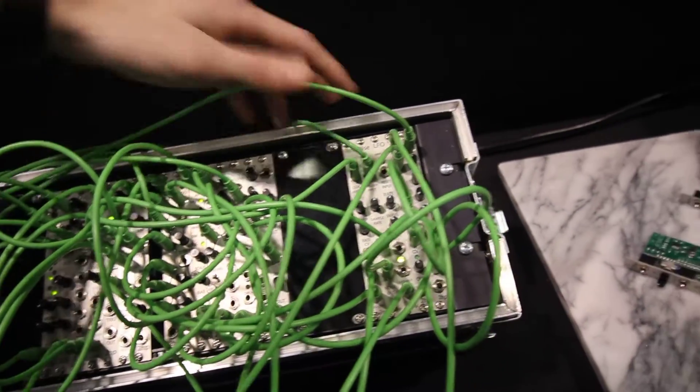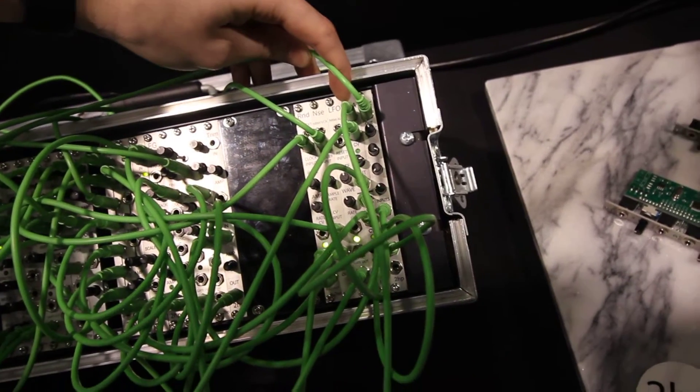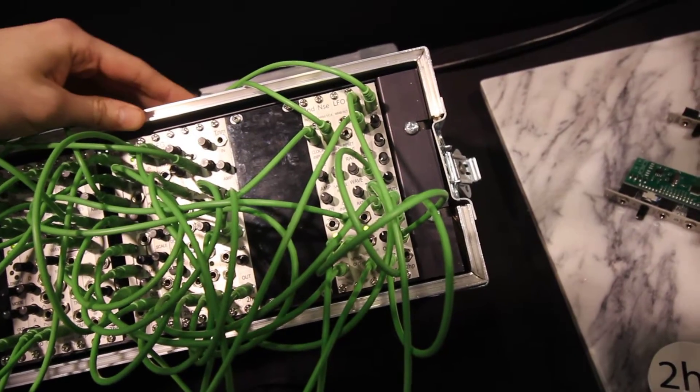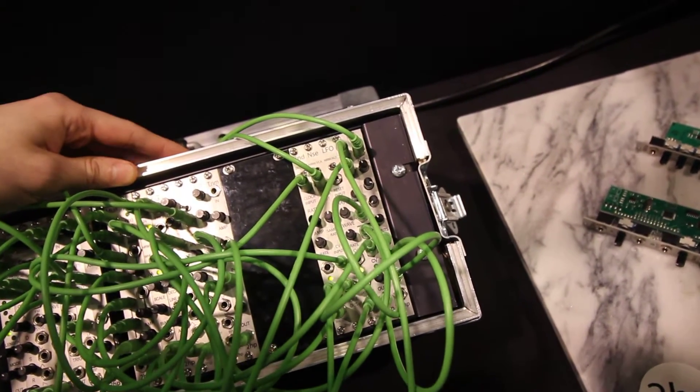The last new module that we're going to release next week is the VCA. It is a two-channel linear VCA. The knobs are attenuators for the incoming CV, and when there's no CV present, they act as a bias control.